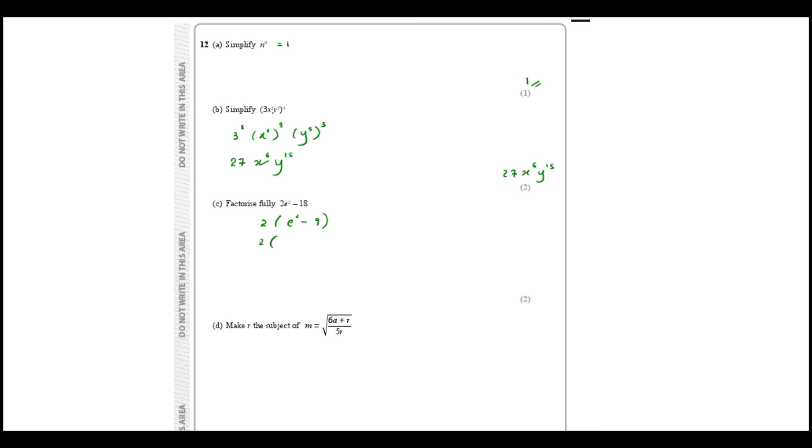We can factorize it by using the method of difference of two squares. 9 can be written as three square, and now we can write this as e minus 3, e plus 3. So your answer is 2 times e minus 3, e plus 3.